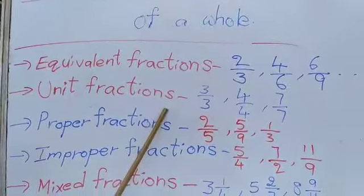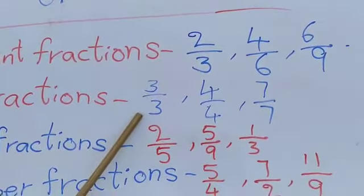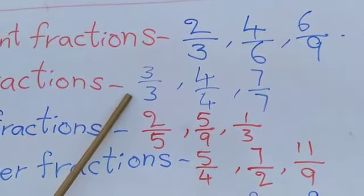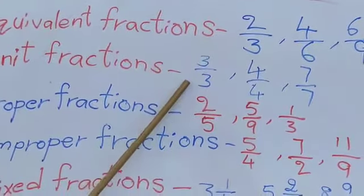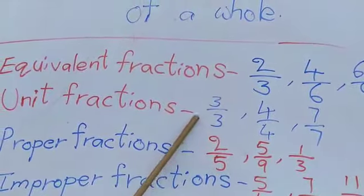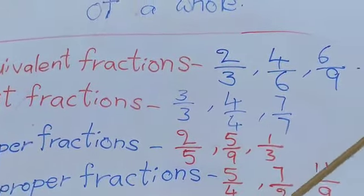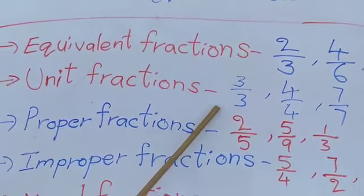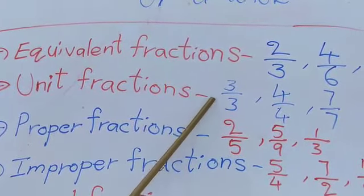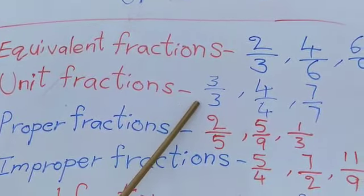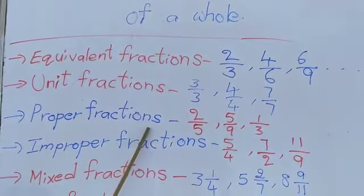Unit fractions means the numerator and the denominators are the same, that is equal to 1 whole. So 3 by 3, 4 by 4, 7 by 7 and so on — where the numerator and denominator are equal — complete 1 whole. This type of fractions are unit fractions.